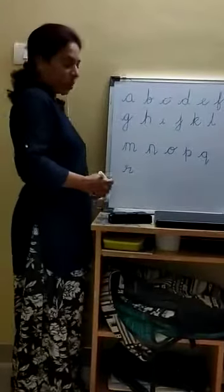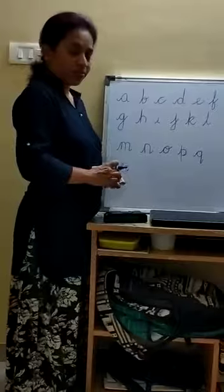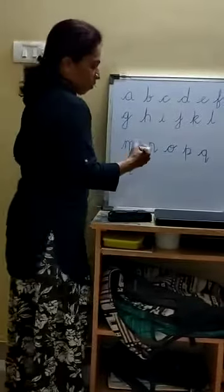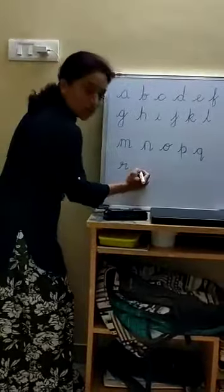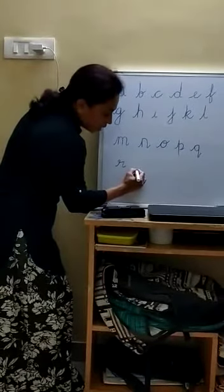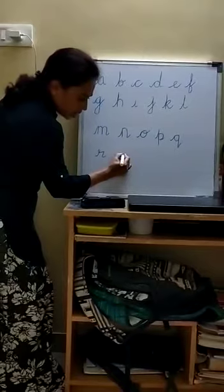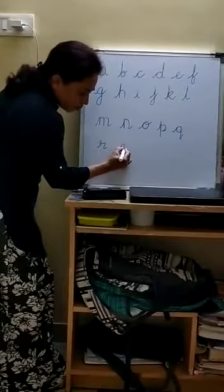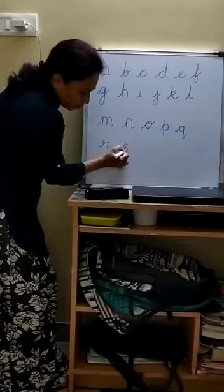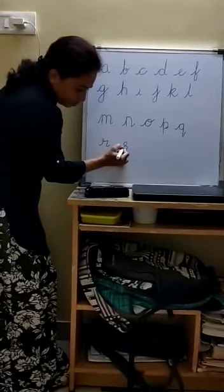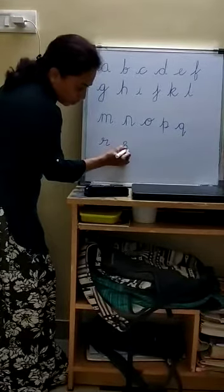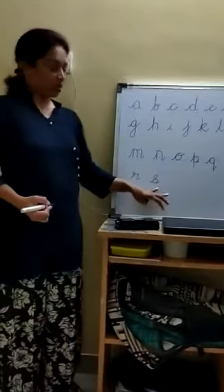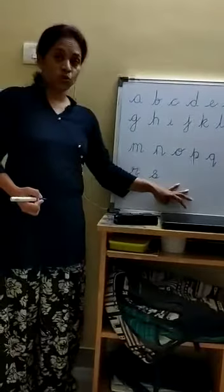Next is S. Name of the letter is S. Sound of the letter is S. In between the second and third line. Starting from the third line, go to the second line with a slant line, take a circle, small and curve, touch to this tail, come back, and leave the tail. S. Snake. S. Shoe.